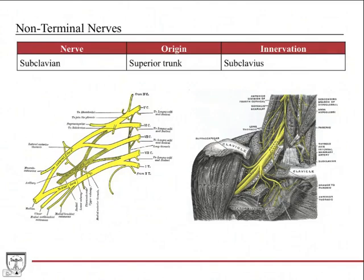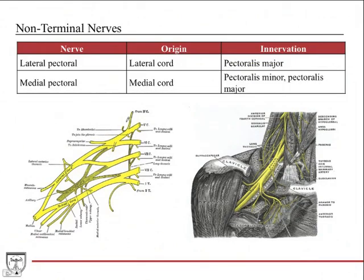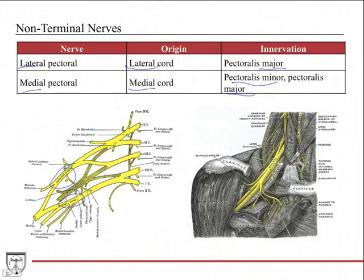The subclavian nerve — sometimes called the nerve to subclavius — innervates the subclavius, a small muscle in the pectoral region responsible for elevating the clavicle. It comes off the superior trunk. Then there are the lateral pectoral and medial pectoral nerves — they're named not for their position relative to each other, but because the lateral pectoral comes off the lateral cord and the medial pectoral comes off the medial cord. They both innervate pectoralis major, and the medial pectoral also innervates pectoralis minor.